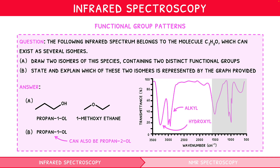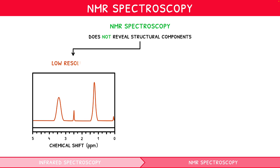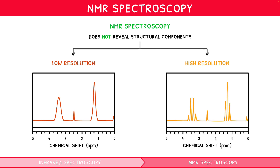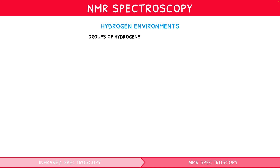This is where the final imaging modality is extremely useful. Nuclear magnetic resonance spectroscopy (NMR) does not reveal the components of the structure or functional groups within, but it has the capacity to differentiate isomers. It can be visualised at low and high resolutions, although only those studying IB Chemistry higher level will need to cover high resolution images, covered in our Topic 21 video series. Before we get stuck into NMR, we first need to explain the concept of proton, i.e. hydrogen environments — simply groups of hydrogens found within similar situations.